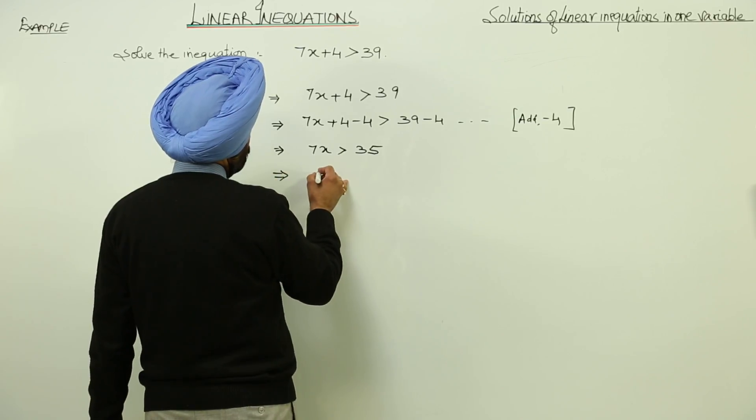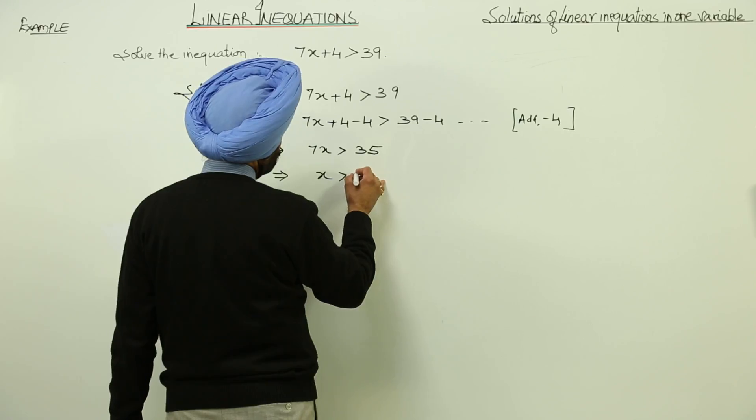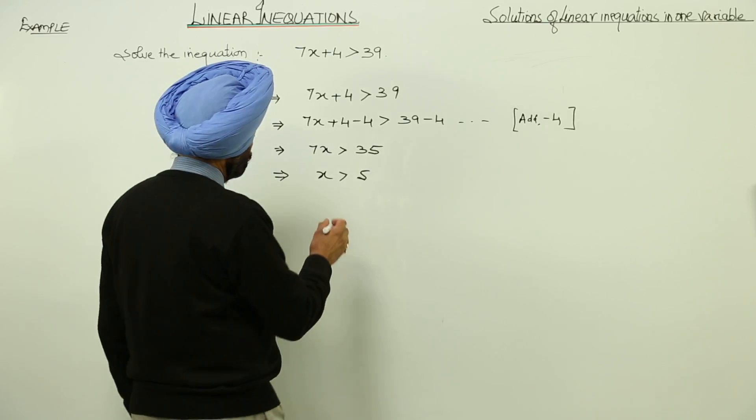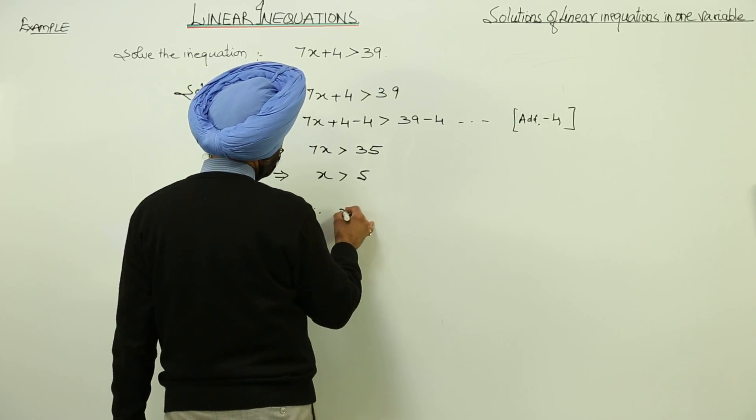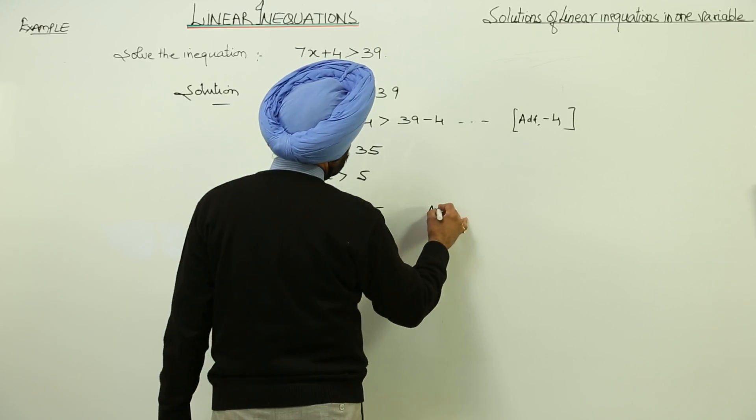Now x is greater than 5, dividing both sides by 7. Therefore, x is greater than 5 is the answer.